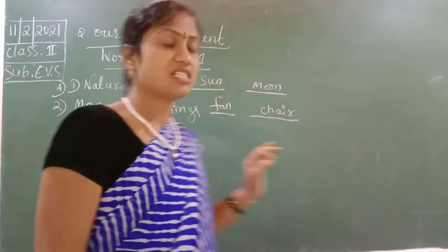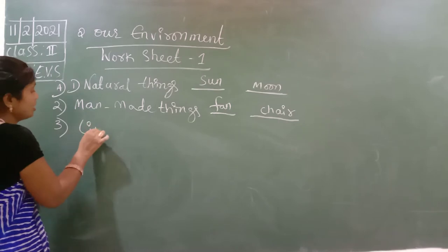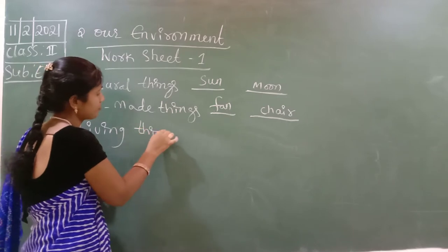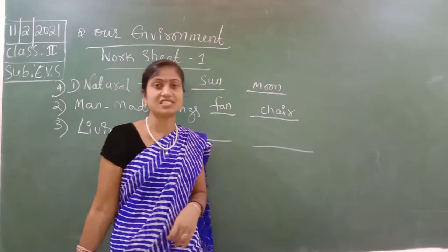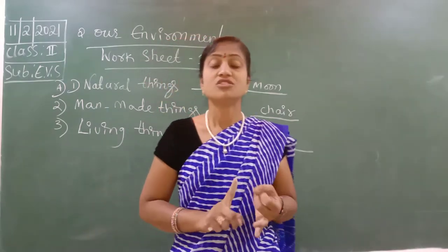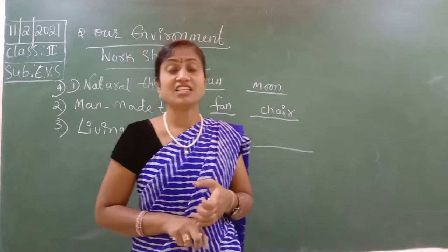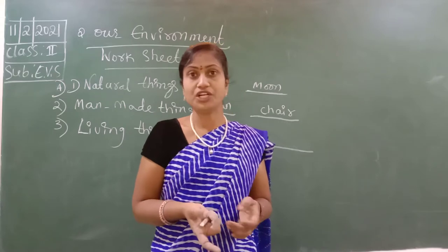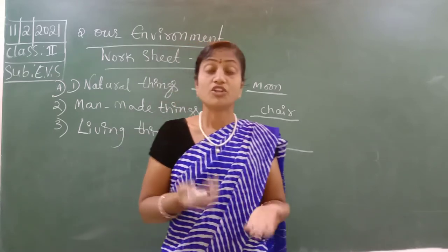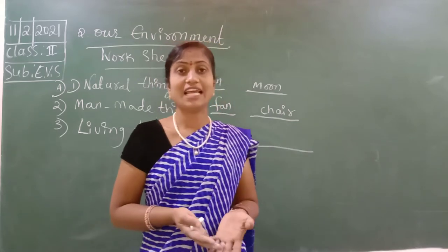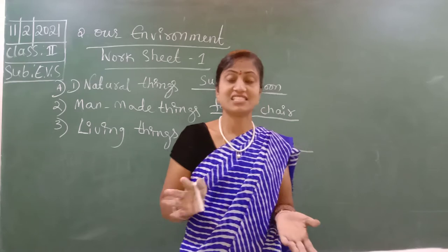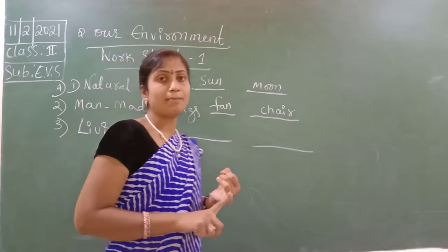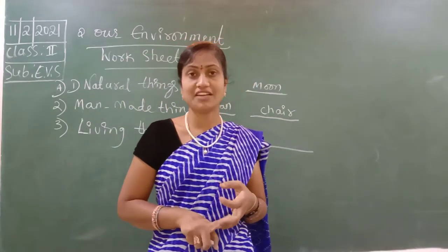Third one — living things. Living things need food, living things need air, living things reproduce, living things can move. Without food, without water they can't live. So all living things need such things. Write any two living things names — all plants, all animals, and human beings are living things.